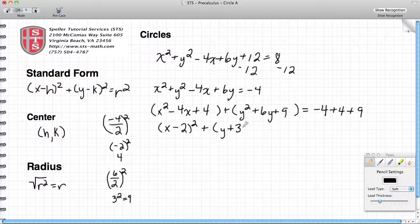So this here turns into x minus 2 squared plus y plus 3 squared. Then I evaluate what's over here to the right: negative 4 plus 4 gives me 0, and that just leaves me with 9.